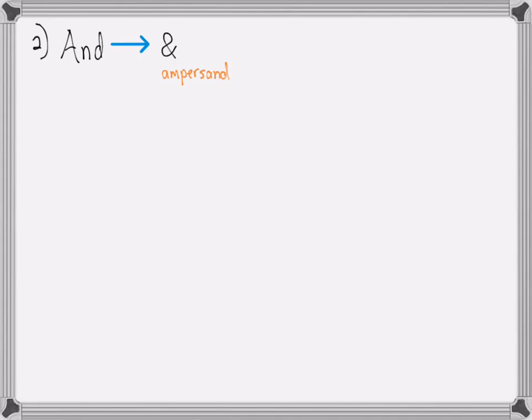The second connective is and. For that we use the symbol from the keyboard called an ampersand. Other symbols used are the wedge or an upside down u. Those are usually called intersections. It means the same thing. All of these are conjunctions. The symbol we'll use is the ampersand.